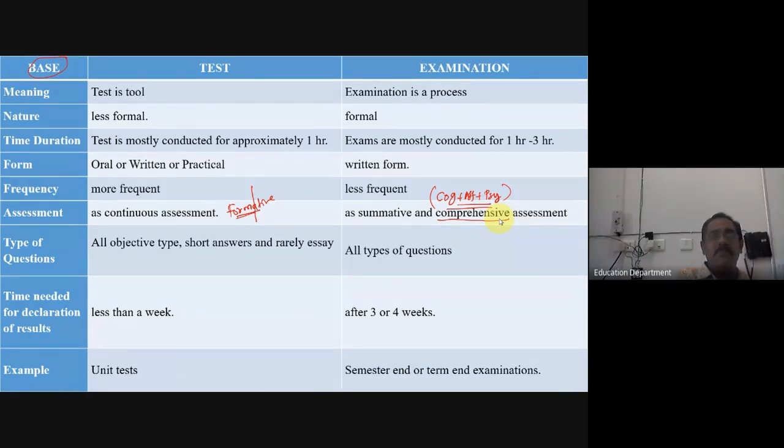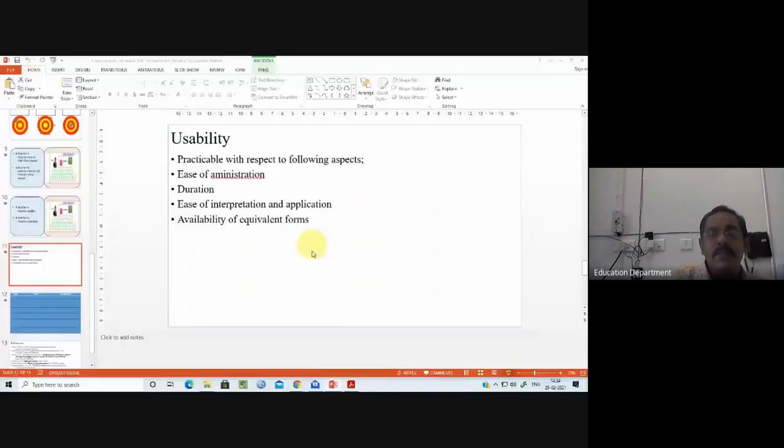So example: unit test and semester or term end examination. Based on this we have said meaning, nature, time, form, frequency, assessment, types of questions, time needed for declaration of results, and example. On all this basis we have separated, we have distinguished between test and examination.